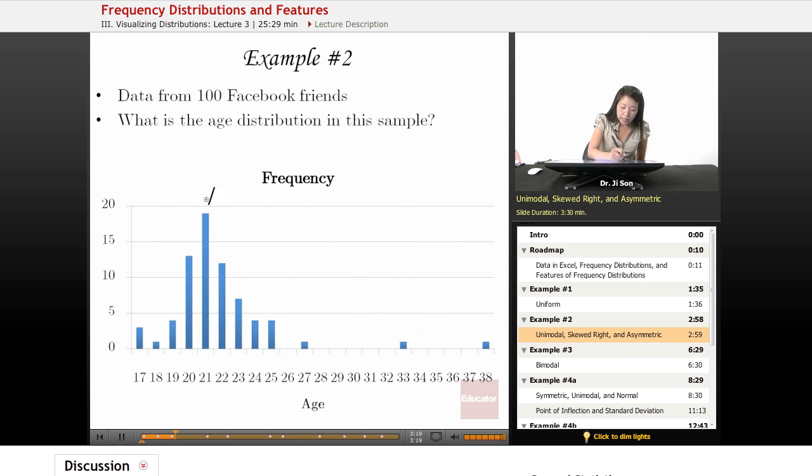And because of that, this peak, often called a mode, the most frequent member, the most frequent value, this peak makes this a unimodal distribution. So I'm not going to call it example two anymore. I'm going to call it a unimodal distribution.